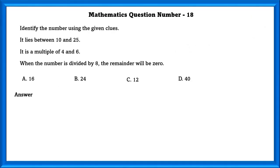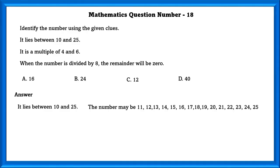Mathematics question number 18. Identify the number using the given clues: it lies between 10 and 25; it is a multiple of 4 and 6; when divided by 8, the remainder is 0. The multiples of both 4 and 6 within 10 and 25 are 12 and 24. The only number among these divisible by 8 with remainder 0 is 24.